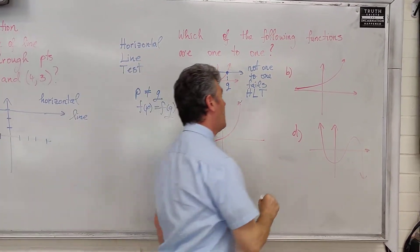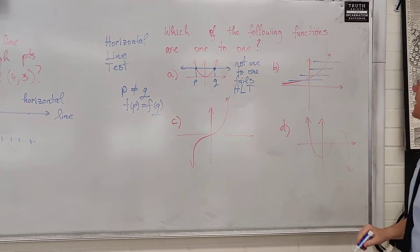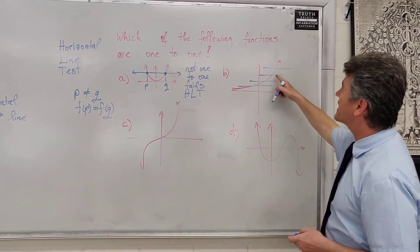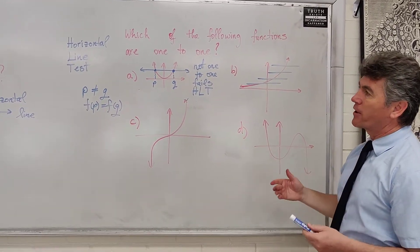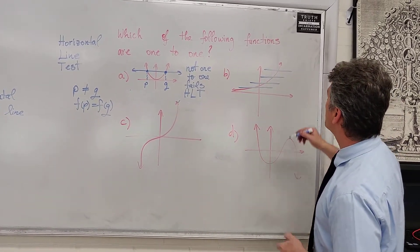Let's take a look at the next graph. What do we notice? Well, no matter where I draw a horizontal line, it only intersects the graph in one point. So, if P and Q are different, then f of P and f of Q are also different.